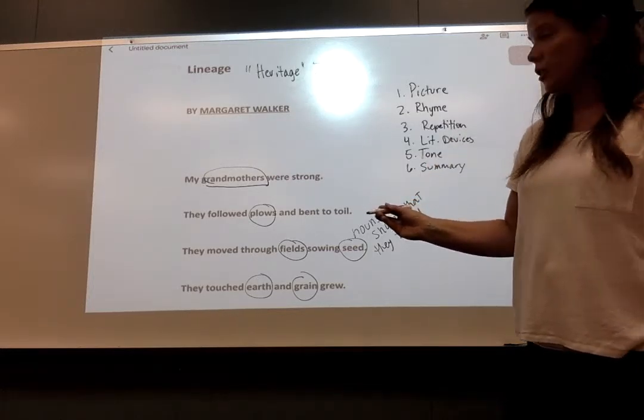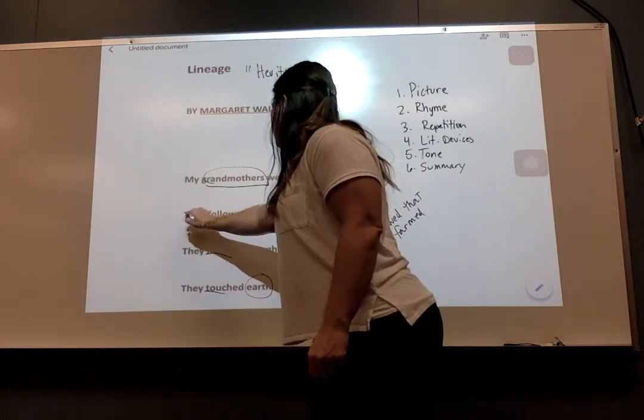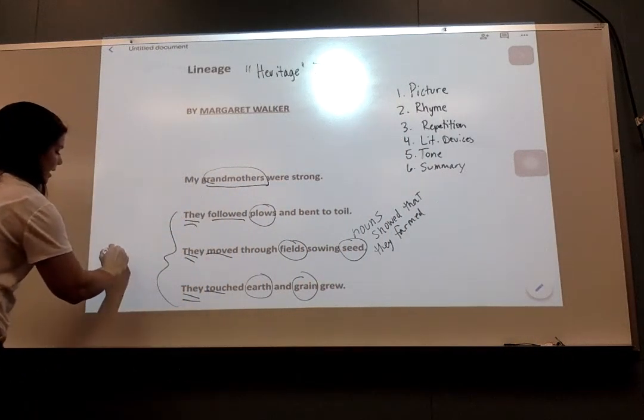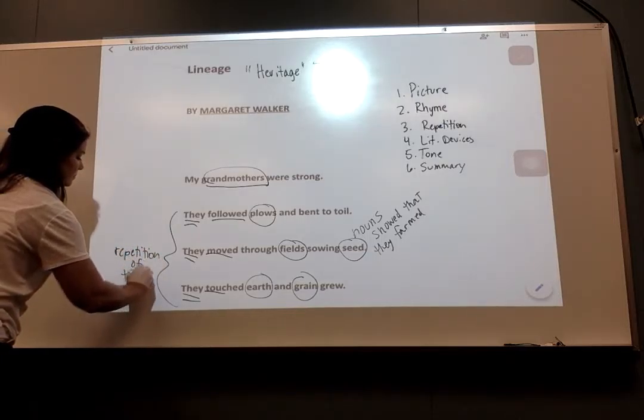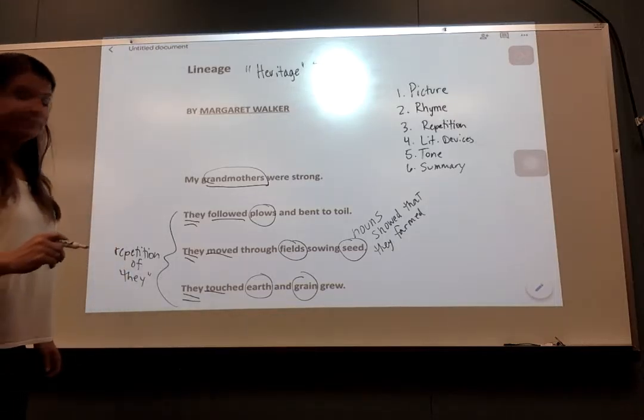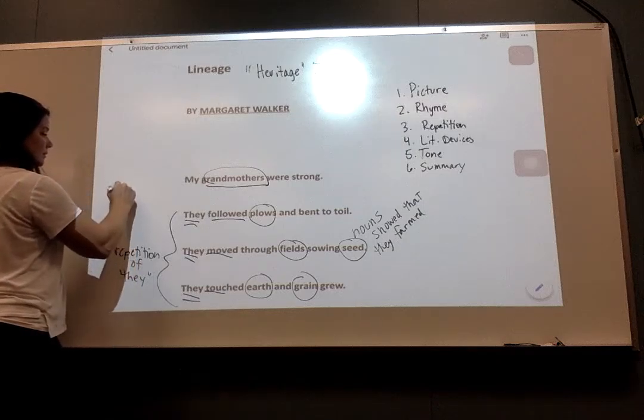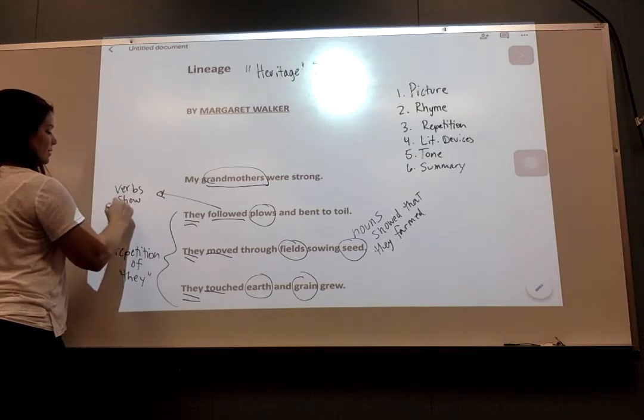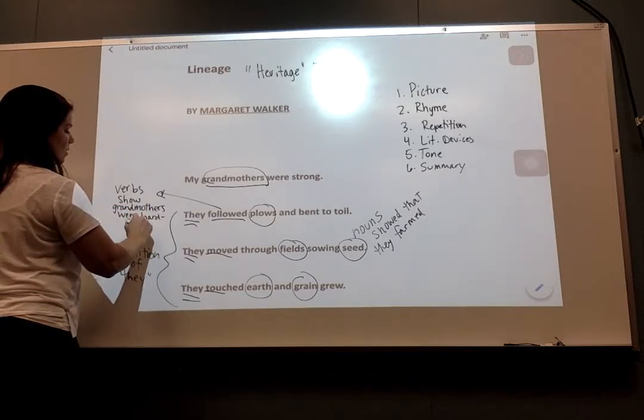Now I also underlined the verbs. So I went through, and I said, they followed, they moved, they touched. Hey, look at this. We've got they, they, they. That's some repetition. So let's mark that. And they meaning the grandmothers, right? So I just noted that they followed, they moved, they touched. So they were hardworking. So all of these verbs show grandmothers are hardworking.